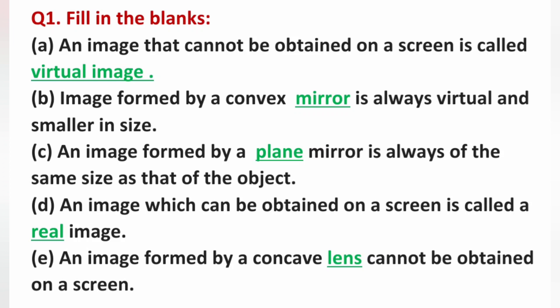D. An image which can be obtained on a screen is called a real image. Vah image jise hum screen par prapt karte hain, us image ko real image kehete hain. E. An image formed by a concave lens cannot be obtained on a screen, kyunki concave lens virtual image form karta hai, jo hamesha behind the screen form hoti hai.